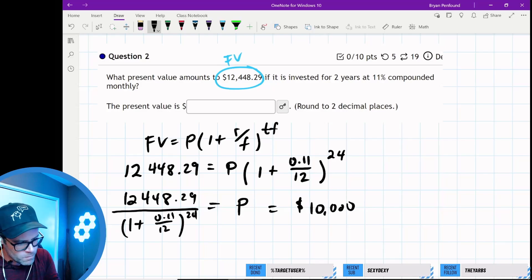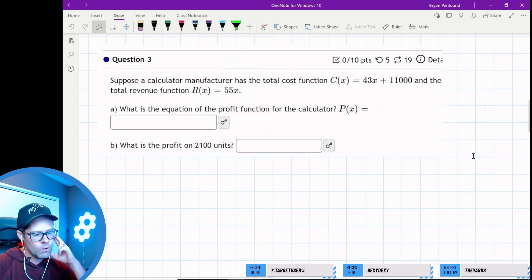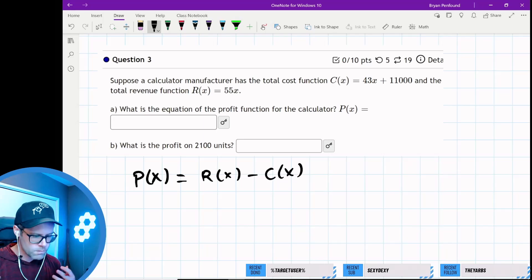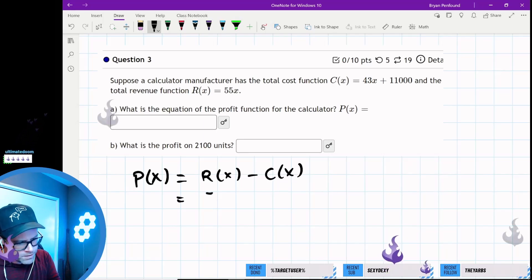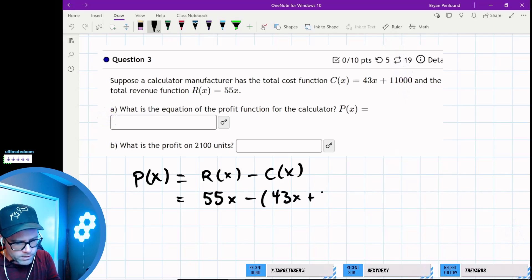Suppose a calculator manufacturer has this total cost function and this total revenue function. What is the equation of the profit function? Profit is revenue minus costs, so P(x) should be the revenue I bring in minus the costs to produce the items. Revenue is $55 times the number of items, and I need to subtract off all the costs.